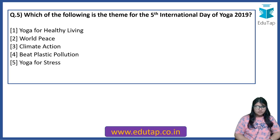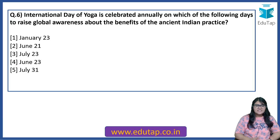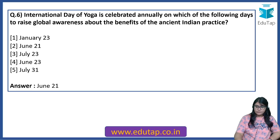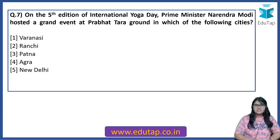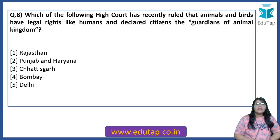Which of the following is the theme for the 5th International Day of Yoga 2019? The answer is Climate Action. The Ministry of Ayush theme is 'Yoga for Heart.' These are two important things to note. The International Day of Yoga is celebrated annually on 21st June. On the 5th edition, Prime Minister Narendra Modi hosted a grand event at Prabhat Tara Ground in Ranchi, Jharkhand.